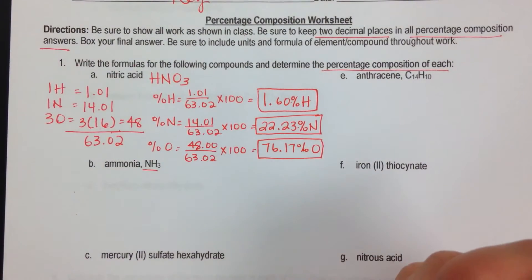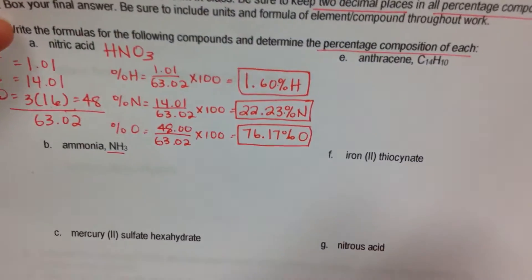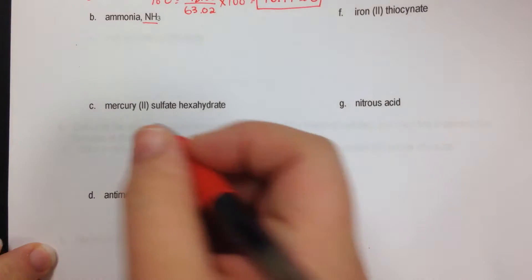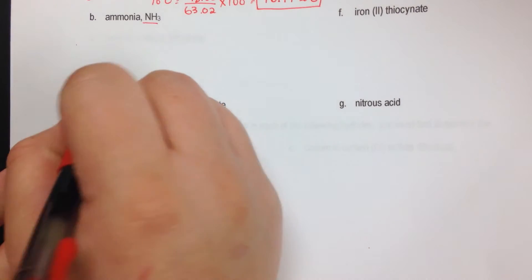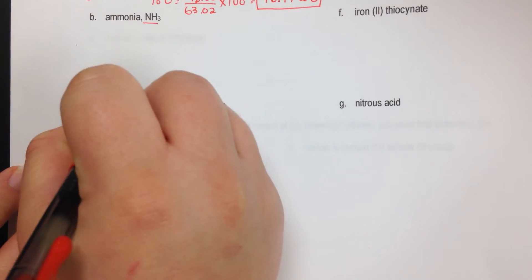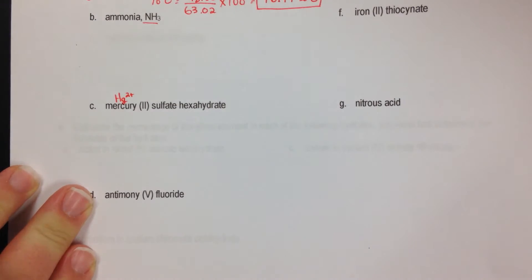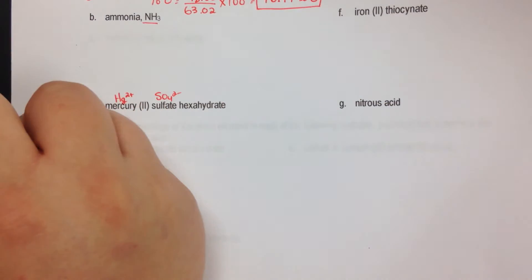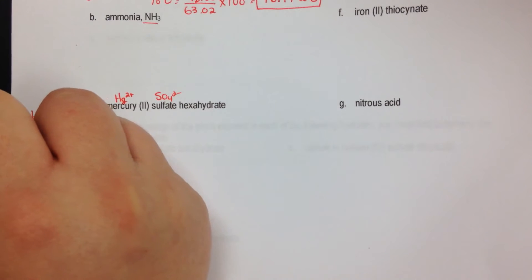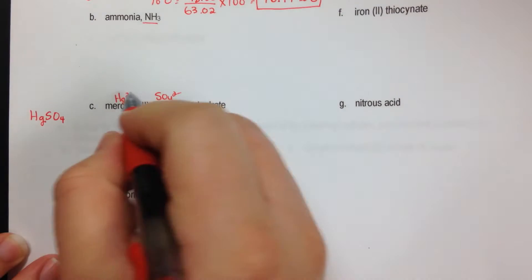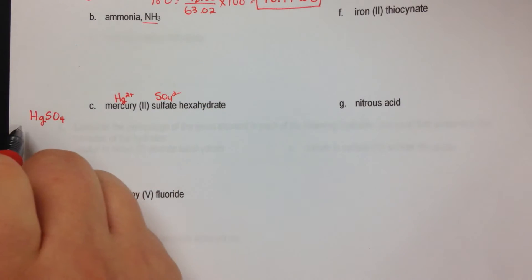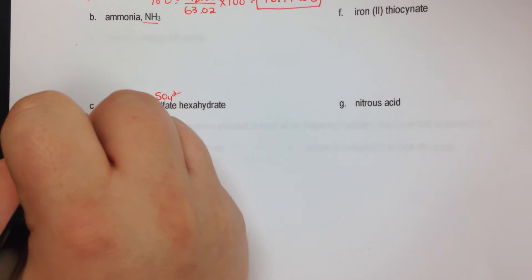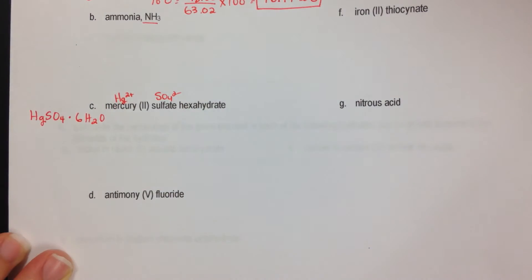Now jumping down to part C, dealing with a hydrate — you may need a little extra room, so write small. Mercury(II) is Hg2+, sulfate is SO4 2−. When I write this compound, the 2+ and 2− cancel out, giving us the mercury(II) sulfate portion. Hexa means 6 waters.